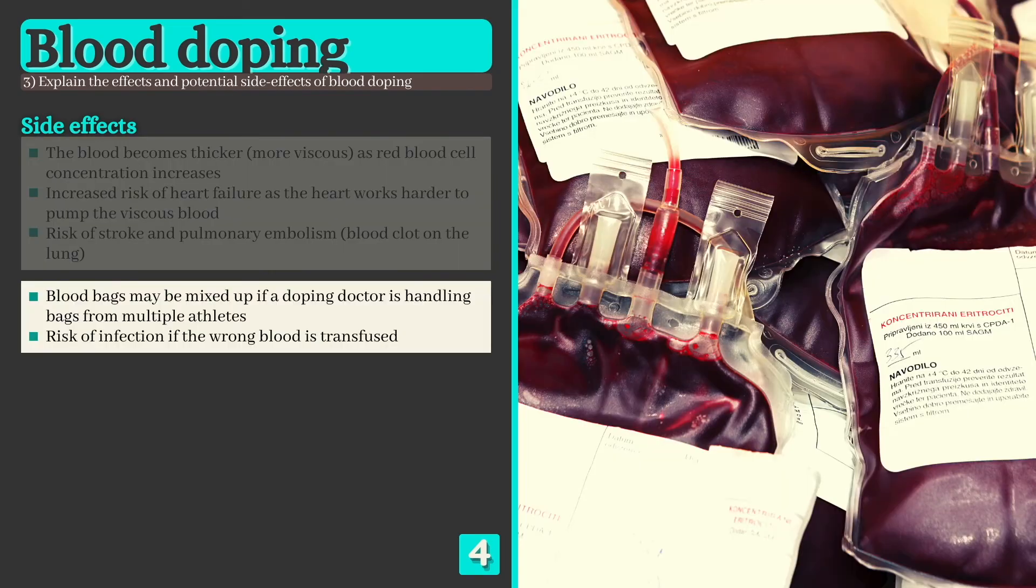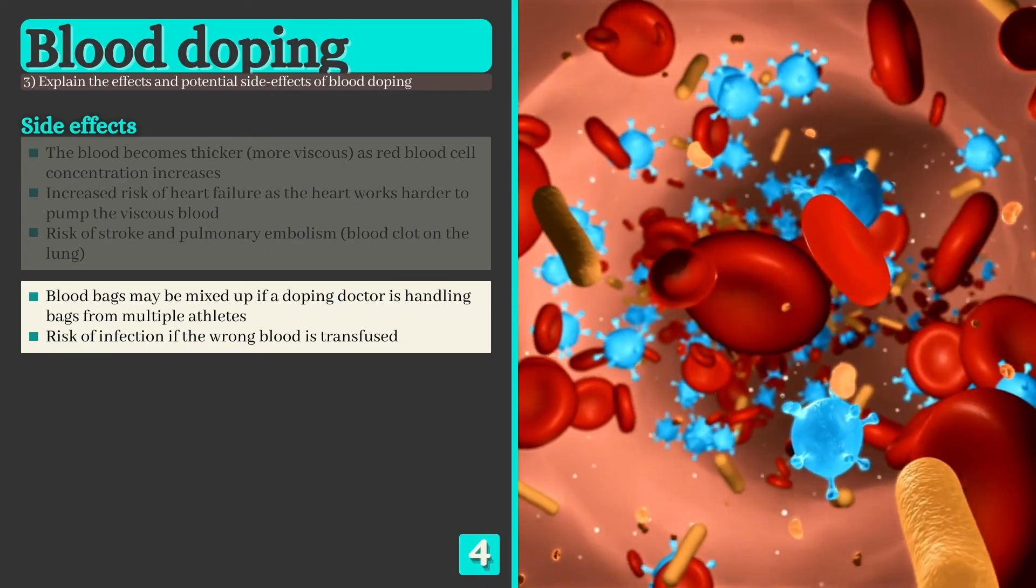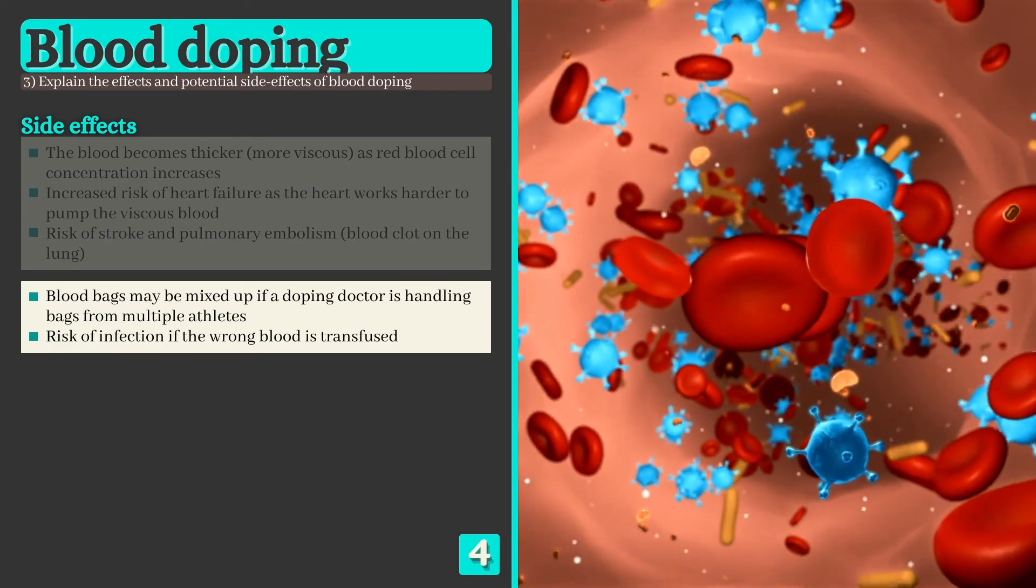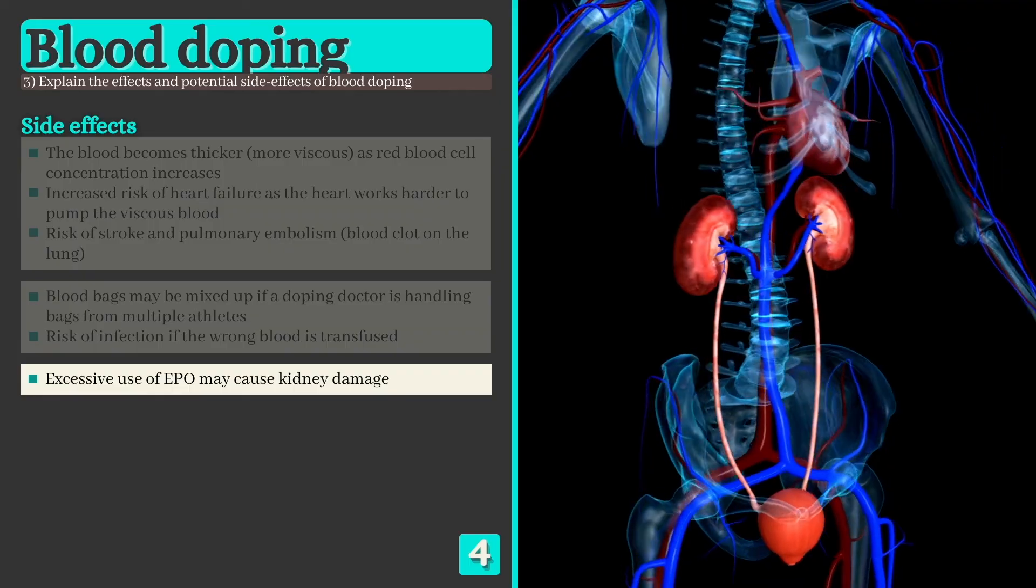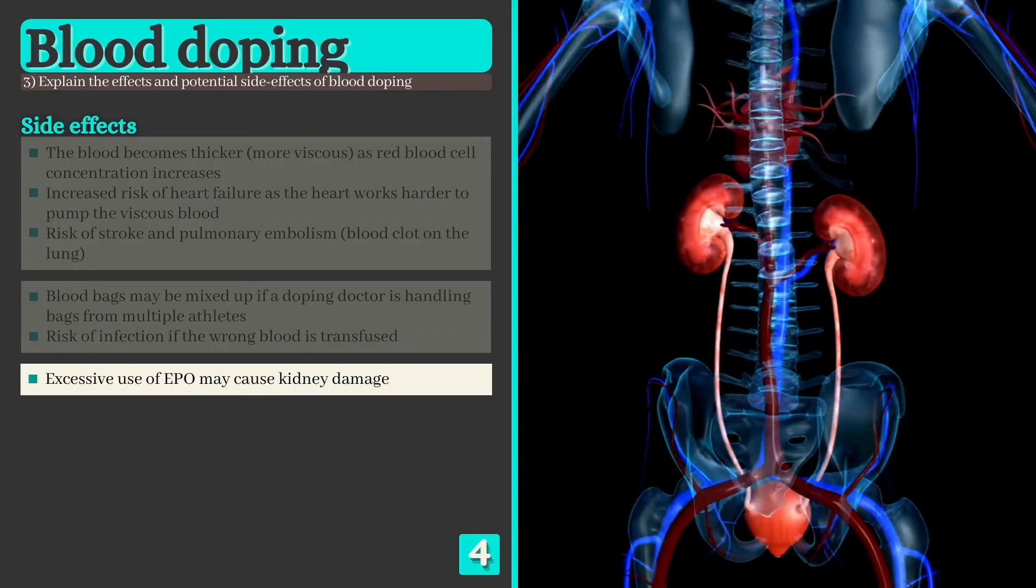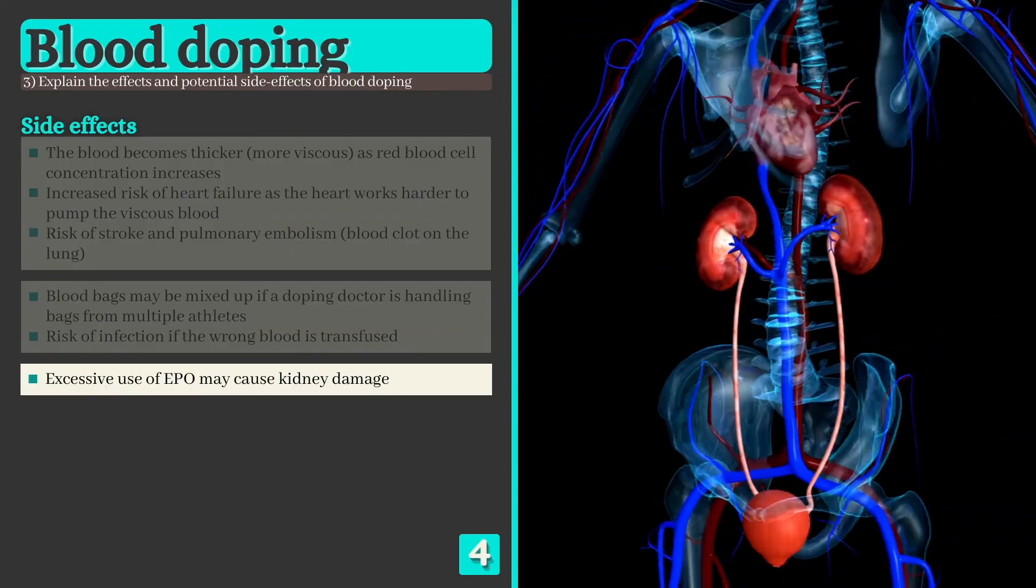In addition, when using transfusions, blood bags may occasionally be mixed up if a doping doctor is handling bags from multiple athletes, which could lead to infection or the athlete's body rejecting the foreign blood. Finally, athletes may suffer from kidney damage if they use EPO excessively.